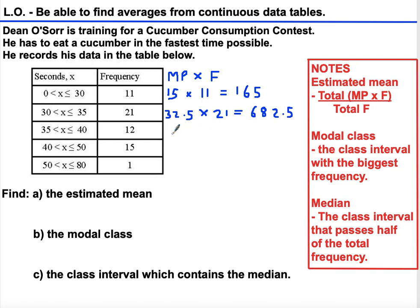We've got 37.5 multiplied by 12, and that is 450. Our next midpoint will be 45 multiplied by 15, which is 675.